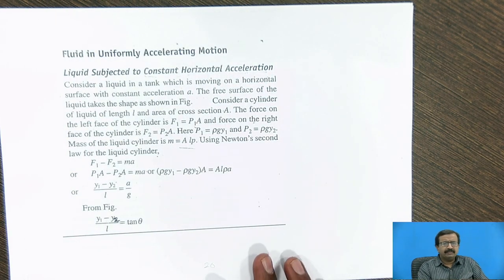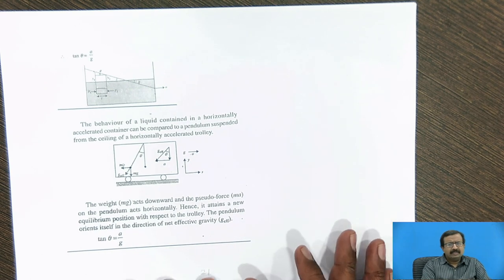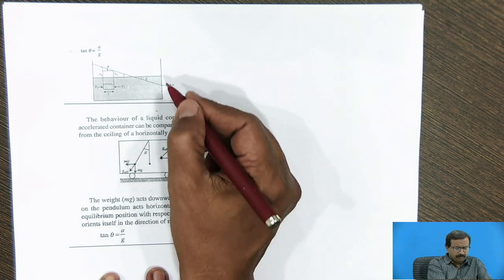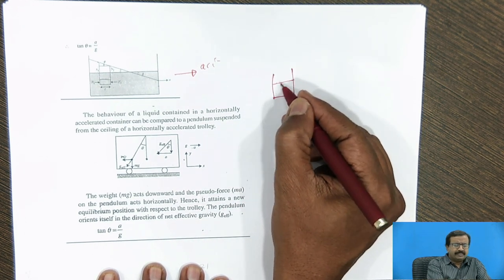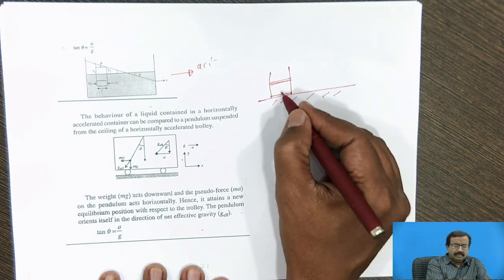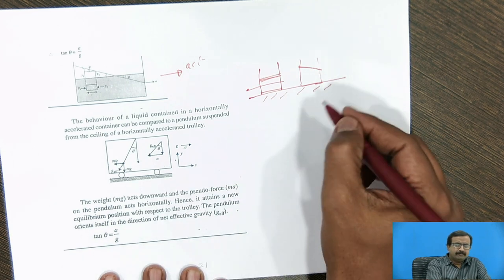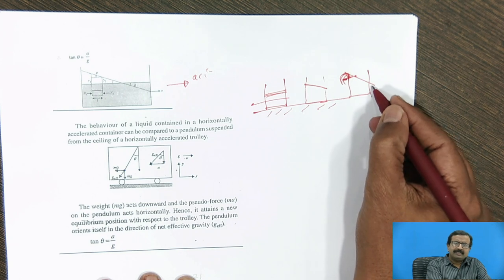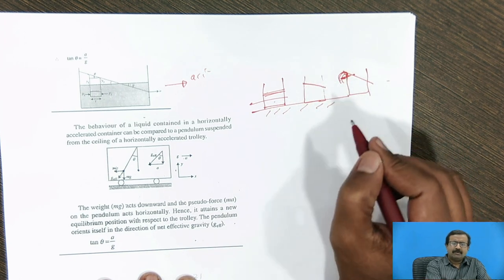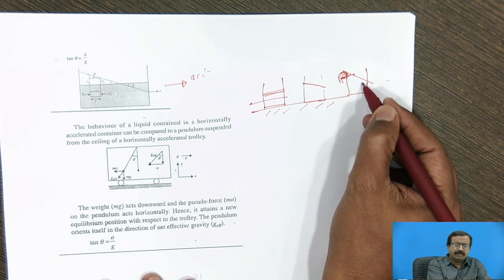Next, we consider fluid that is uniformly accelerated. Suppose a container is moving with a certain acceleration in the horizontal direction. As a simple example, if a glass of liquid on a smooth table is pushed, the glass moves forward and the liquid surface tilts. With more acceleration, water may spill. We need to find how high the container must be so that when a vehicle accelerates, water will not come out from the edges.